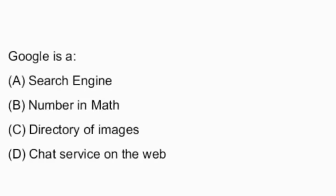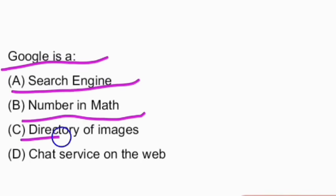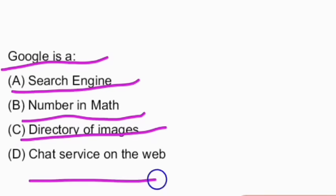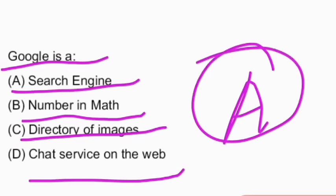Next question: Google is a — search engine, number in math, directory of images, or chart service on the web? The answer is option A, search engine.